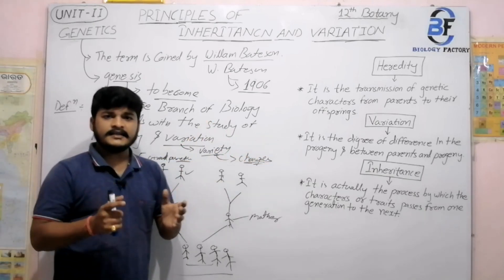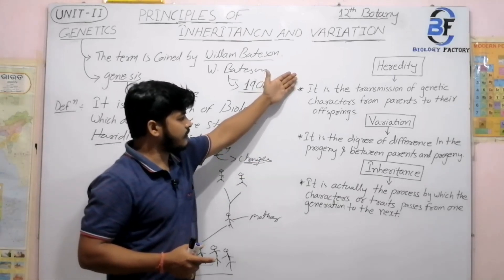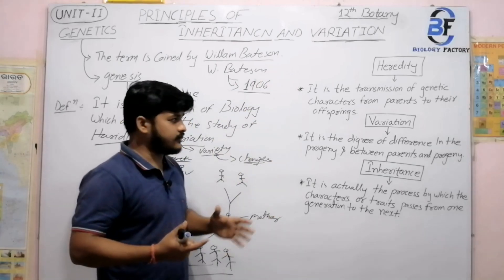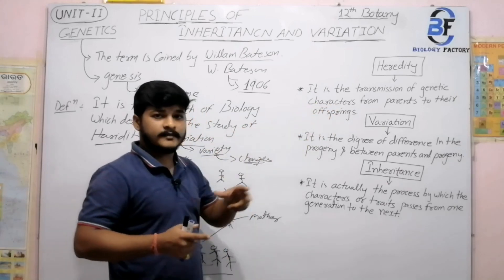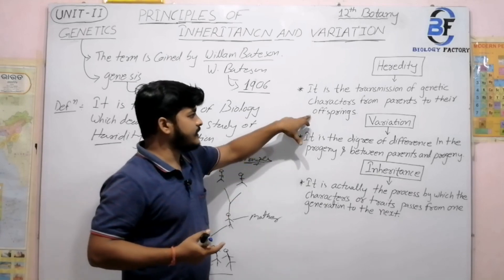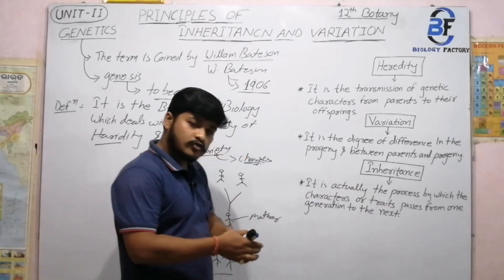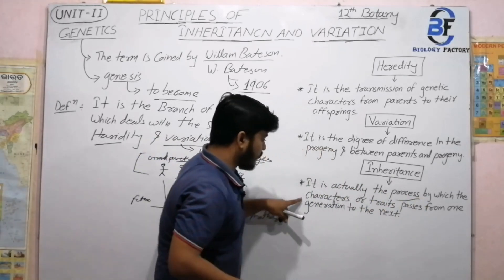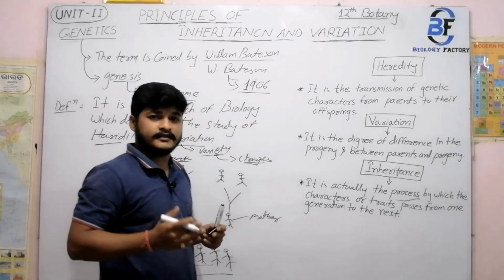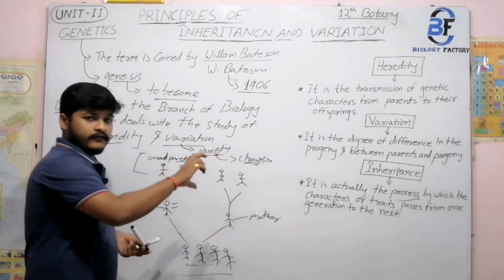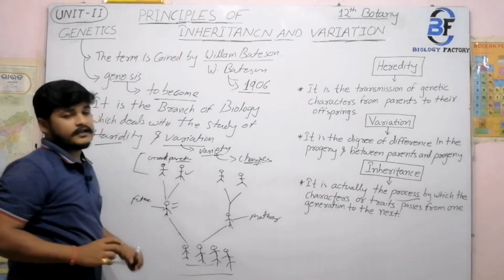Now, what is inheritance? A number of students are confused between heredity and inheritance - these are quite different things. Heredity is the transmission of genetic characters from parents to their offspring. Inheritance, on the other hand, is the actual process - the whole process - by which characters or traits are passed from one generation to the very next generation. From inheritance, variation, and heredity, these three terms are included in your principles of inheritance and variation.